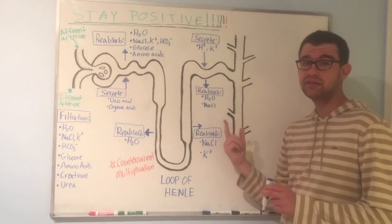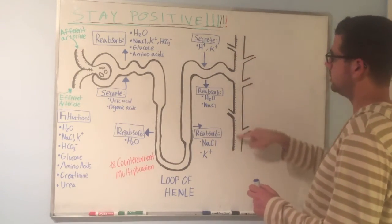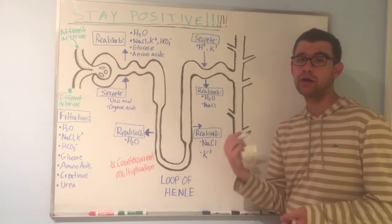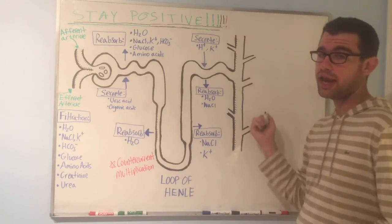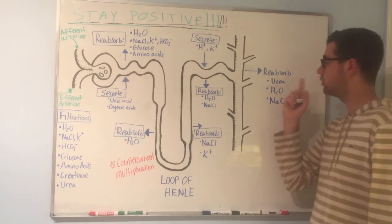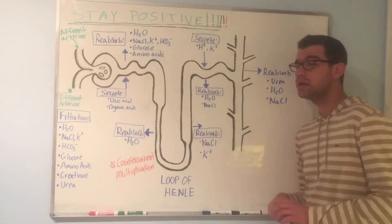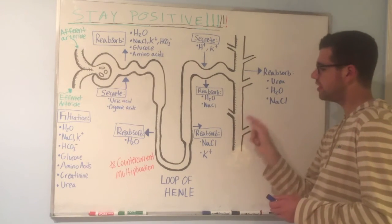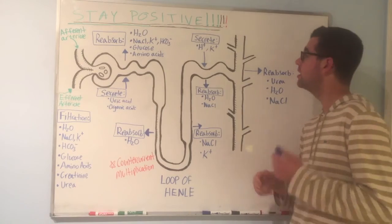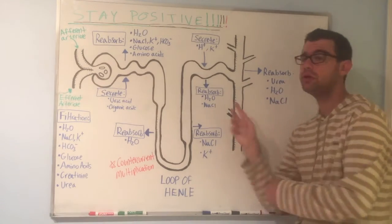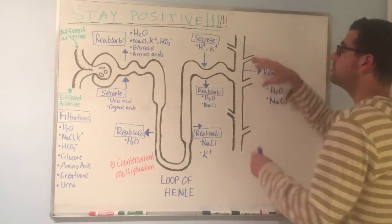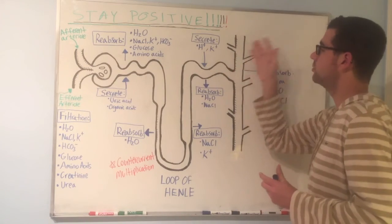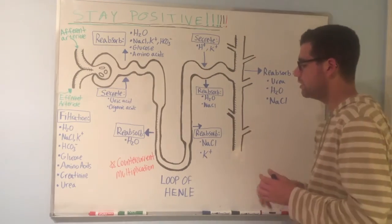Last but not least, we're going to talk about the collecting duct, which is this long structure right here. What's going to happen at the collecting duct? We're going to reabsorb urea, water, and sodium chloride. Also worth noting, a single collecting duct could actually connect to multiple nephrons, as those little outgrowths I drew represent connections to multiple distal convoluted tubules of surrounding nephrons.